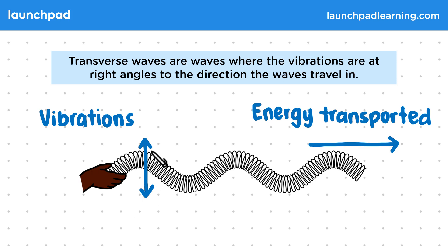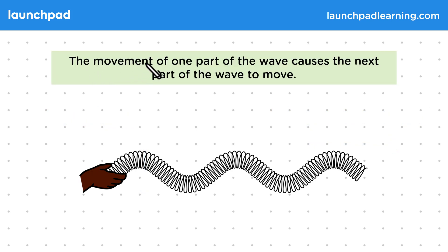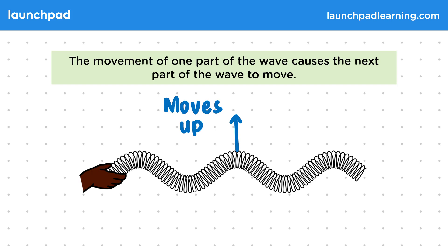But if these vibrations are perpendicular to the direction the energy is sent, then how is this energy moving along the spring? Well the movement of one part of the wave causes the next part of the wave to move. As the kinetic energy reaches this point in the spring, it causes the coils to move up. However, these coils aren't independent — they're connected to the coils next to them. So these coils are about to be pulled up as a result. The coils that have moved have given kinetic energy to the next coils, allowing them to move. And this is how the energy is passed along the spring.